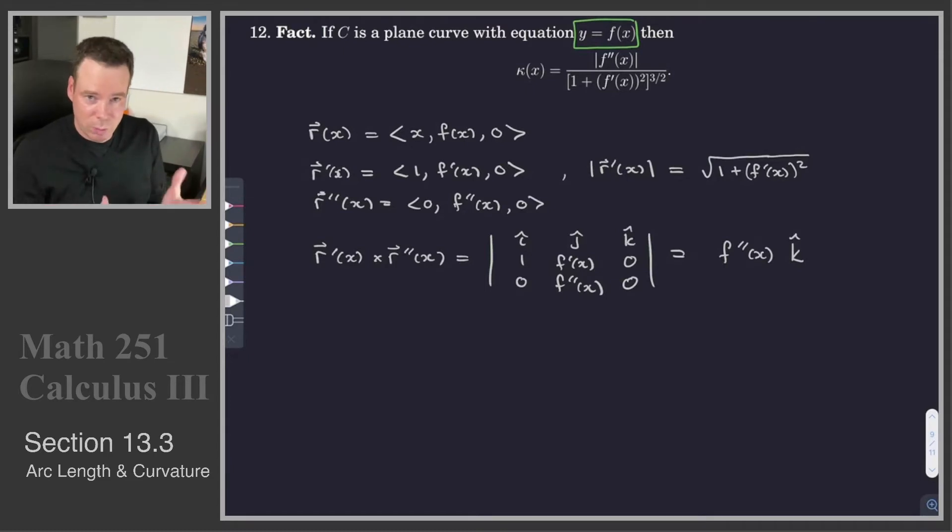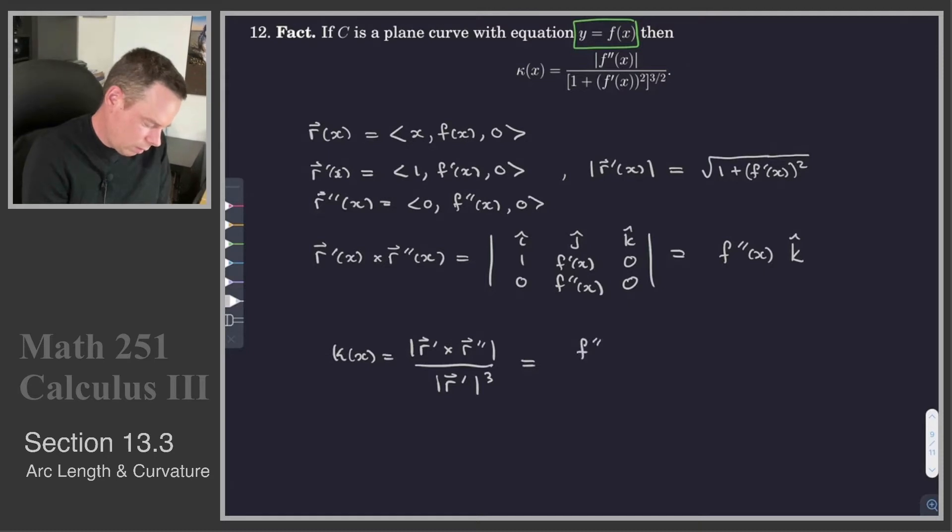Makes sense. We've got two vectors in the plane. When we take their cross product, they should be pointing in the z direction, or the k hat direction. So then our curvature, at any given point, I said t here, but it's really at any given point x. Curvature at any given point x is given by the cross product all over the magnitude of the derivative cubed. So that's f double prime of x all over 1 plus f prime of x all squared to the three halves, the cube of the square root. And there's our formula.